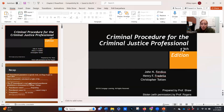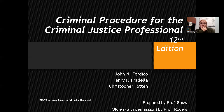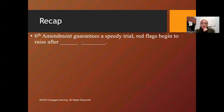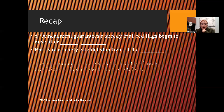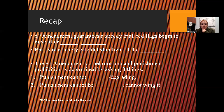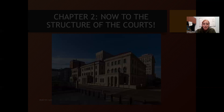Let's look at the court structure. I've talked a lot about whether the 14th Amendment applies or doesn't apply to a case, and whether it's federal or state. Before we do, a quick recap: the Sixth Amendment guarantees a speedy trial — red flags begin to raise after one year, closer to six months. Bail is reasonably calculated in light of perceived evil. Punishment has to be cruel and unusual — humiliating, degrading, arbitrary, and must be completely rejected by society. Now let's look at court structures.